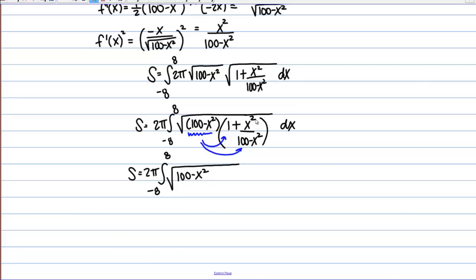And if I multiply it by this fraction, the 100 minus X squareds are going to cancel and I'm just going to be left with X squared. So plus X squared. Well this looks like it's going to work out really nicely for us.